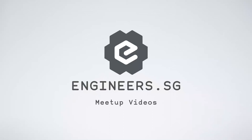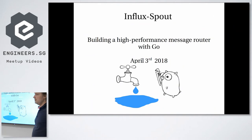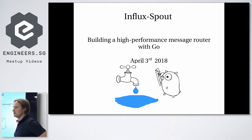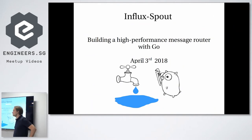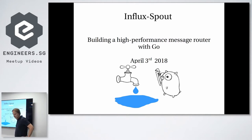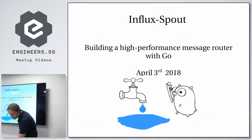I'm going to be talking about InfluxSpout. This ties quite nicely into the last talk. It's going to be a case study about building a high performance message router with Go. It's maybe slightly higher level than the last one, but there are still a few nice bits of code at the end.